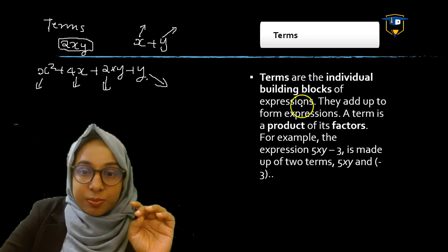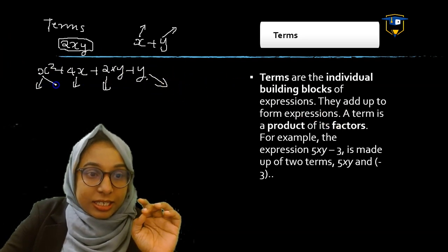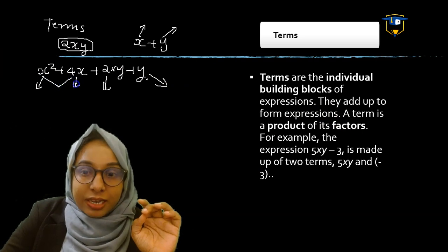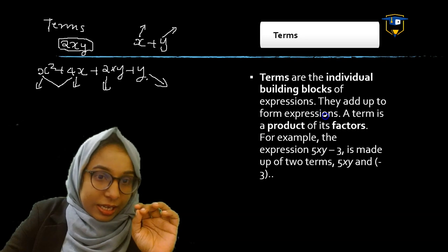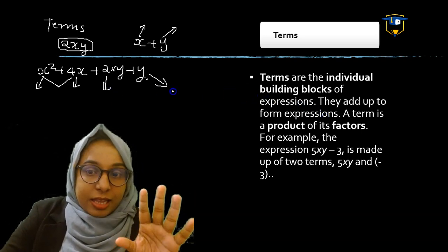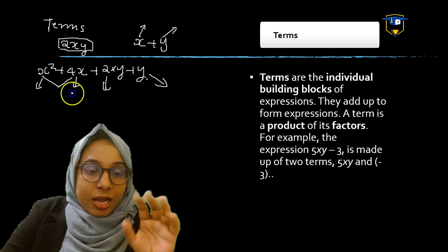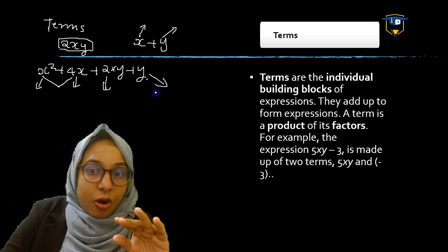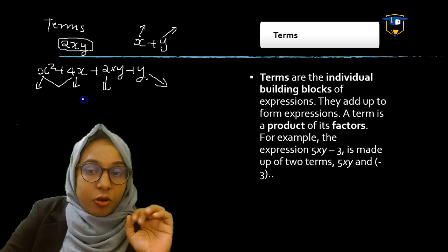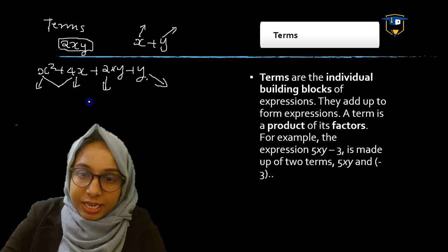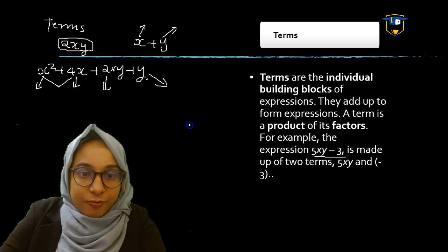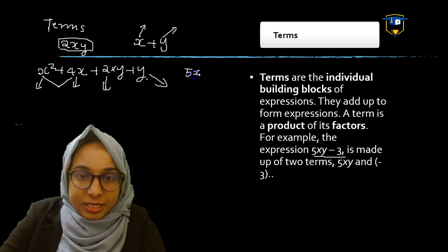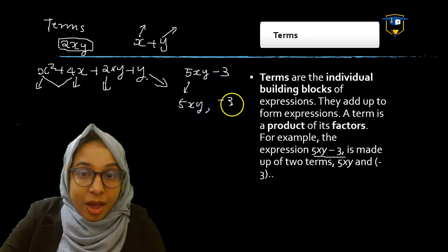When we add terms together, we get an Algebra Expression. For example, 5xy minus 3 — the terms are 5xy and minus 3. Remember, you have to take the sign with the term, because expressions are formed by adding terms. So 5xy minus 3 is written as 5xy plus (minus 3), giving terms 5xy and minus 3.